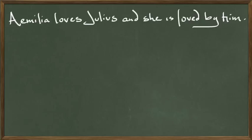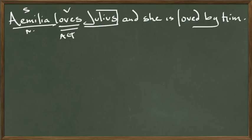Another sentence from Chapter 6: 'Amelia loves Julius, and she is loved by him.' Amelia is the subject in the nominative case. She loves — is she performing the action, is she the one that loves Julius? Yes. So this is an active verb. Whom does she love? Julius — direct object, accusative case.